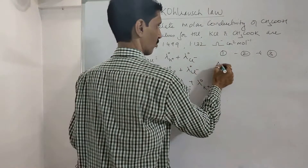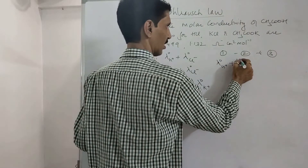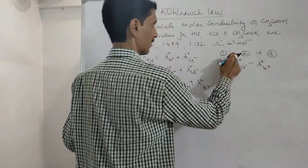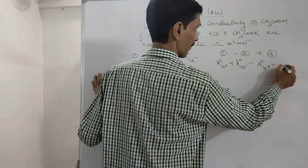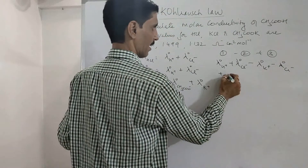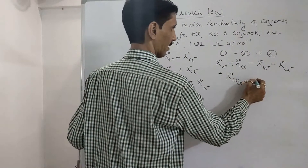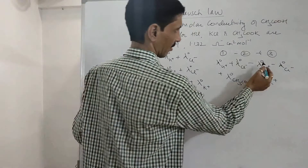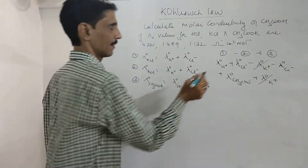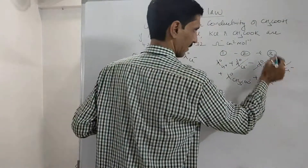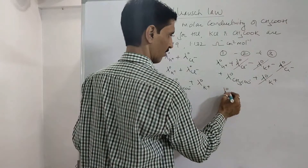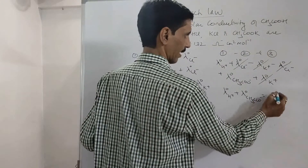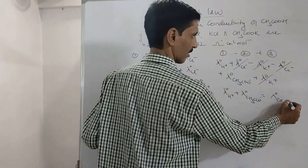Using equation 1 minus equation 2 plus equation 3: λ⁰(H⁺) + λ⁰(Cl⁻) − λ⁰(K⁺) − λ⁰(Cl⁻) + λ⁰(CH₃COO⁻) + λ⁰(K⁺). The −λ⁰(K⁺) and +λ⁰(K⁺) cancel, and +λ⁰(Cl⁻) and −λ⁰(Cl⁻) cancel, leaving λ⁰(H⁺) + λ⁰(CH₃COO⁻), which gives the molar conductivity of acetic acid.